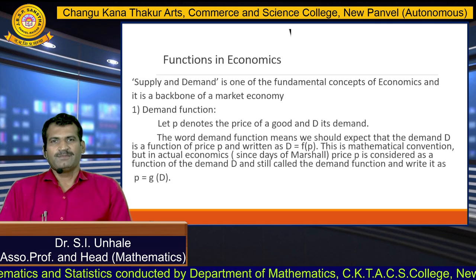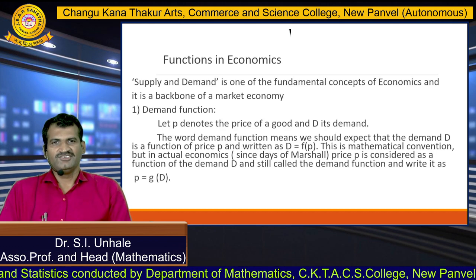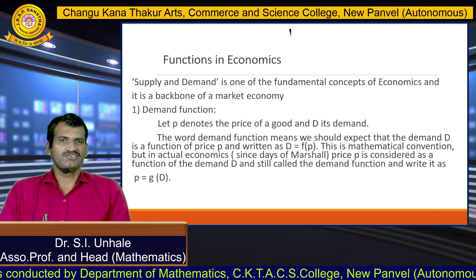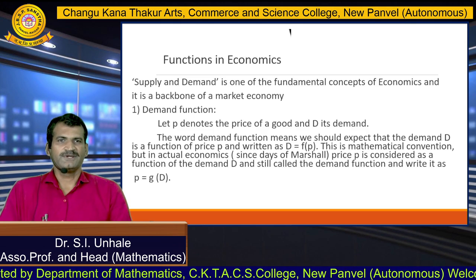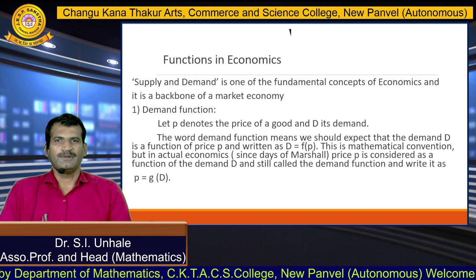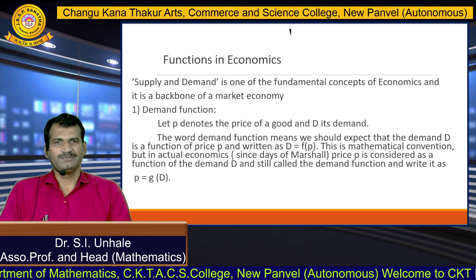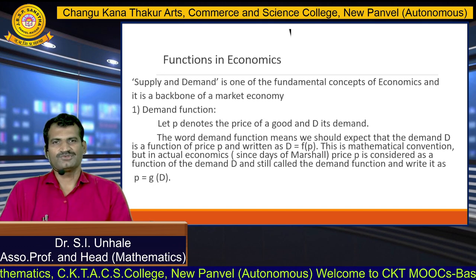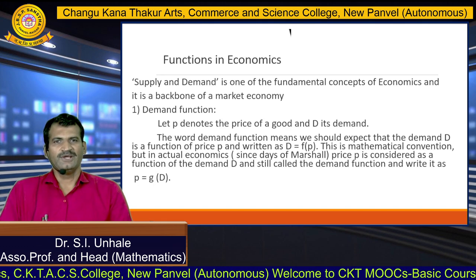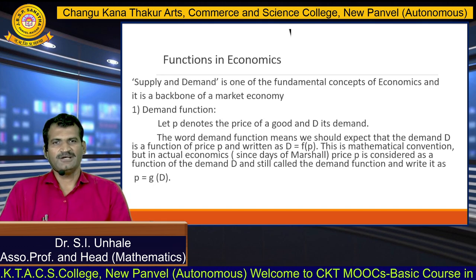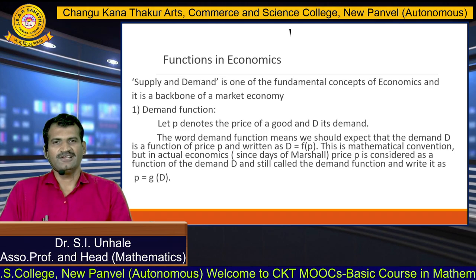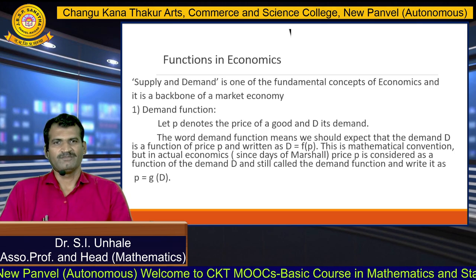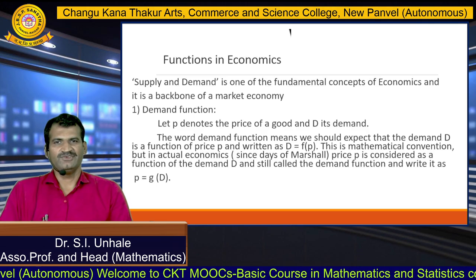Let p be the price of goods and d be its demand in the market. The word demand function means we should expect that demand d is a function of price p, and we write it as d equals f of p, where d is the demand, p is the price, and f is the first letter of the word function. This is the mathematical convention.